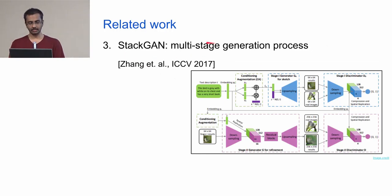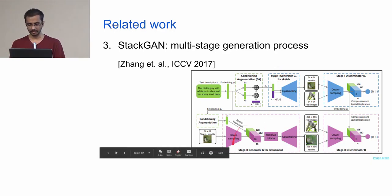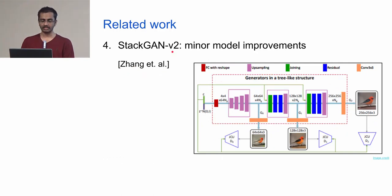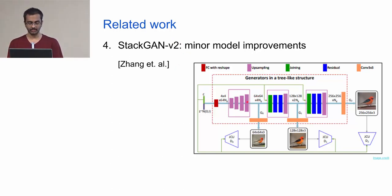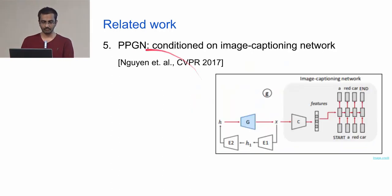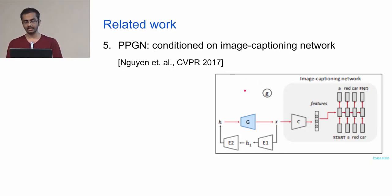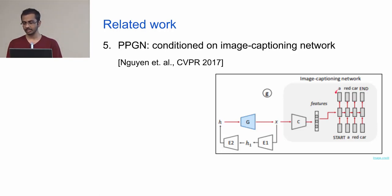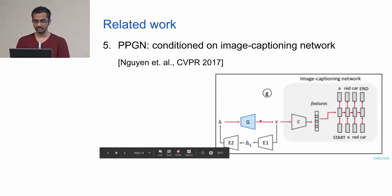Next we have StackGAN, which proposed a multi-stage generation process — something we will see in AttnGAN as well. The image generation is done in multiple stages with multiple generators and corresponding discriminators. The same group then provided minor improvements by interleaving those generator networks. Next is plug-and-play generative networks; their original task was not text-to-image, but one of their settings does address it using a recurrent loop where the generated image is passed to an image captioning network to align the generated caption with the actual description.